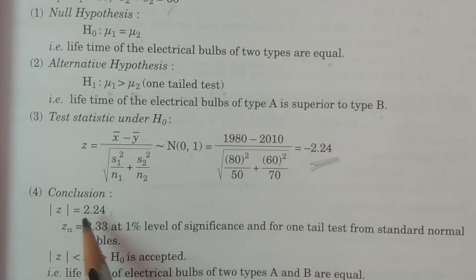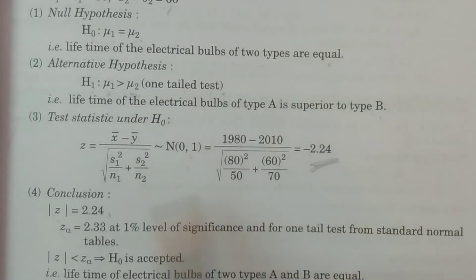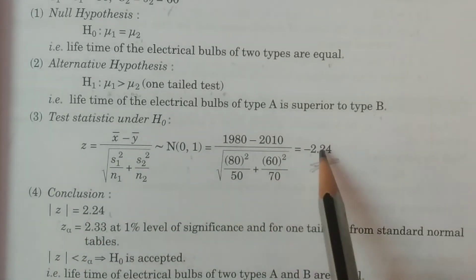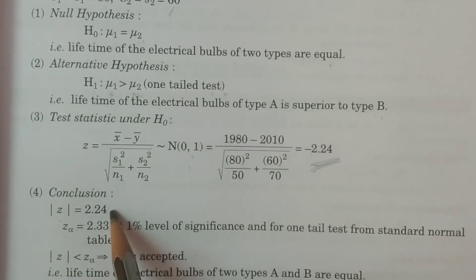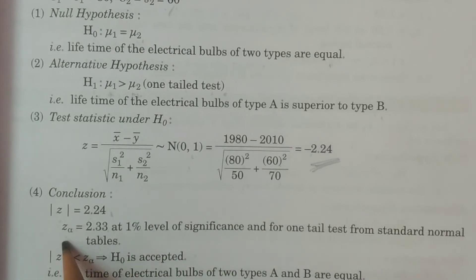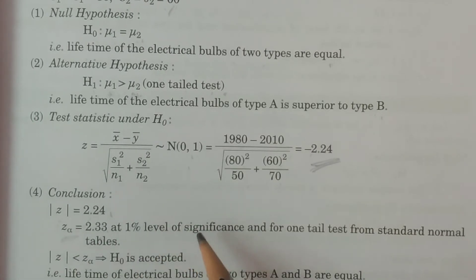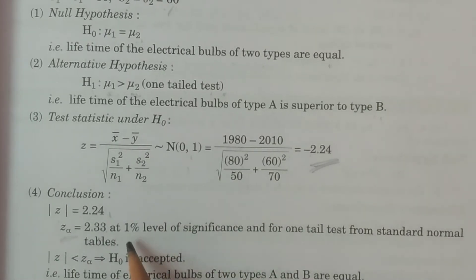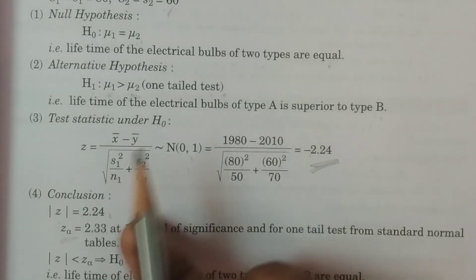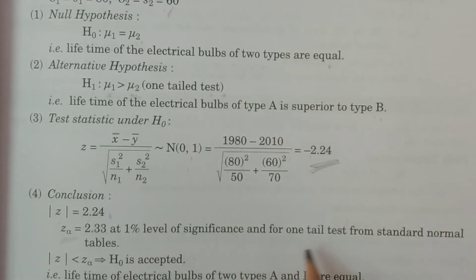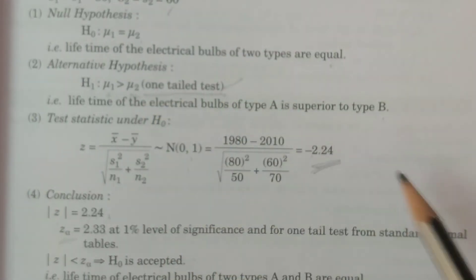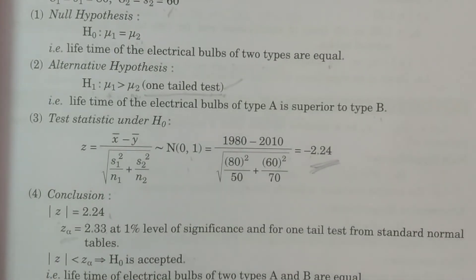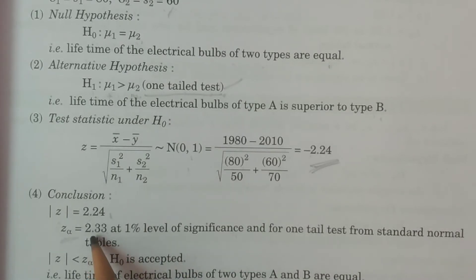For conclusion, first modulus of z. Modulus of z is equal to 2.24. Next, tabulated value z alpha at 1% level of significance. For one-tailed test, from standard normal tables, the value is 2.33.